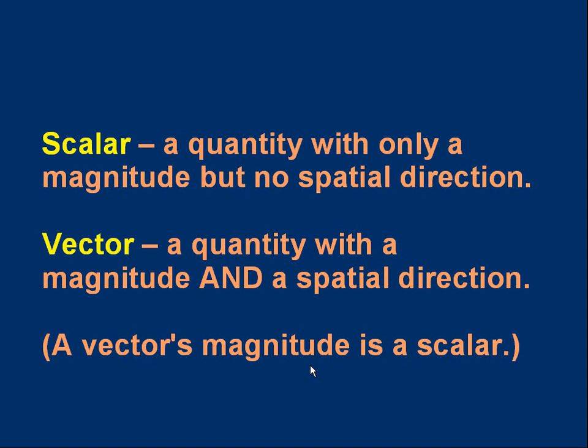For example, we could have a velocity of 100 miles an hour north. That's the magnitude of 100 miles an hour and the direction is north, the way we're going. And the magnitude part, the 100 miles an hour, is a scalar. It's a speed in fact.